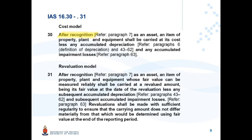Paragraph 30 deals with the cost model. After recognition as an asset, an item of property, plant and equipment shall be carried at its cost less any accumulated depreciation and any accumulated impairment losses.